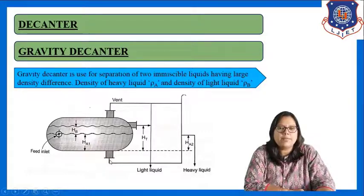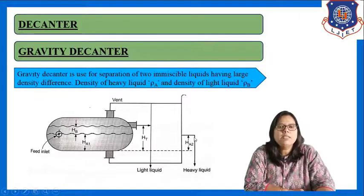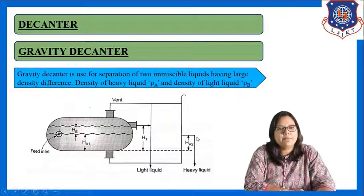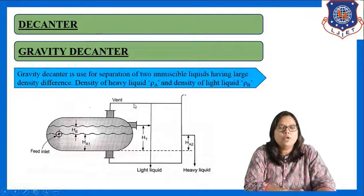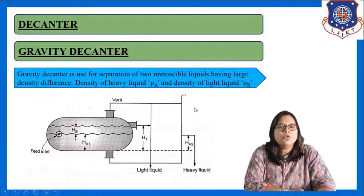The heavy liquid is separated from here, and HA2 is the overflow height of the heavy liquid. A vent is provided here to remove any air which is present in the decanter. This is the basic construction of the gravity decanter.